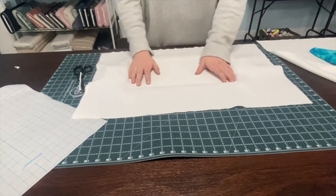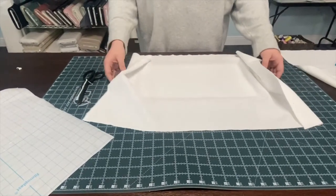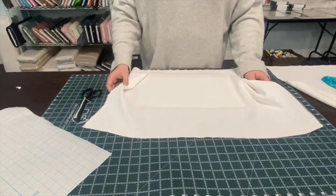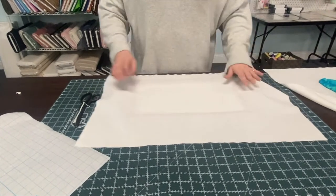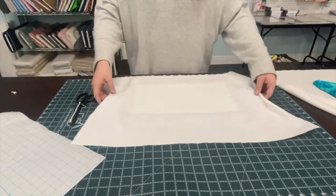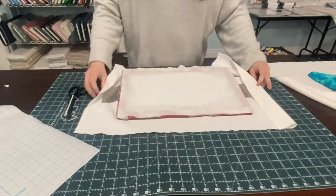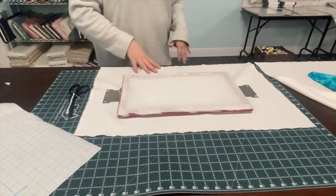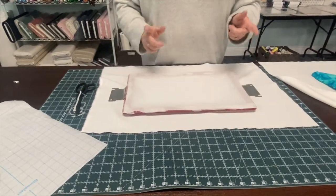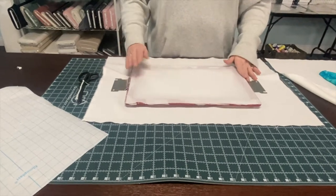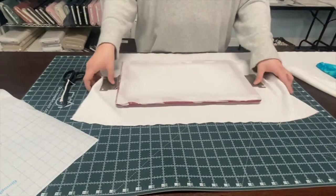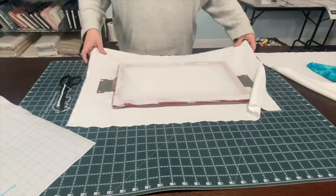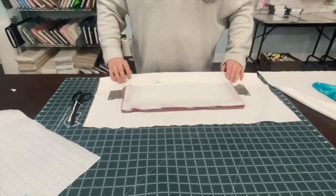We're going to head to our machine. What you could do if you wanted a little bit more extra stabilizer, you could flip it to the back, get some cutaway and spray some KK 100 on the back of that cutaway, and then stick it to here so you'd have just a little bit more stabilization. Now let's head to our machine.